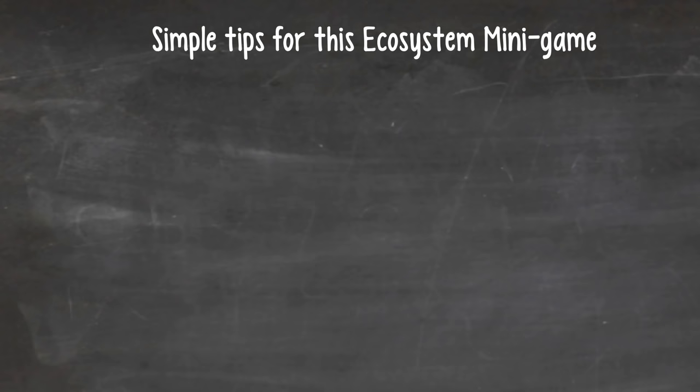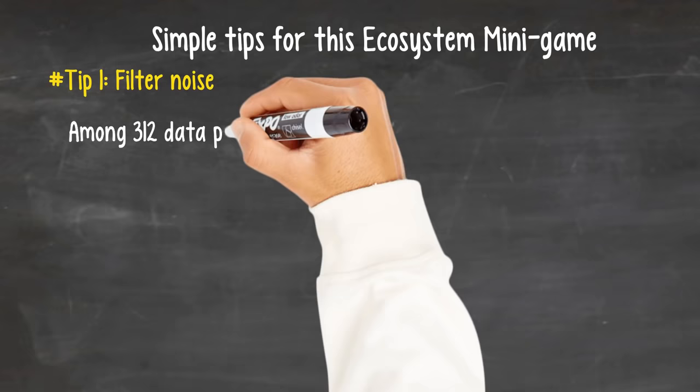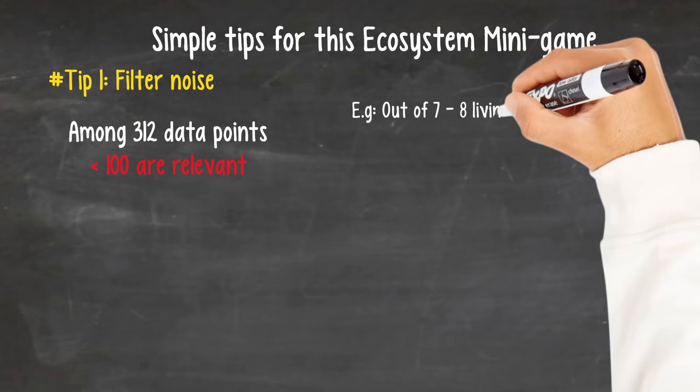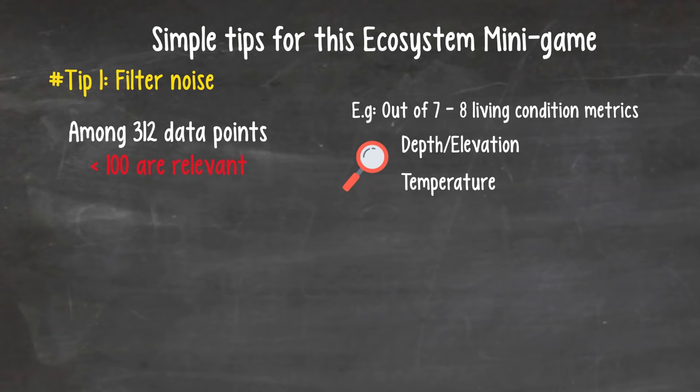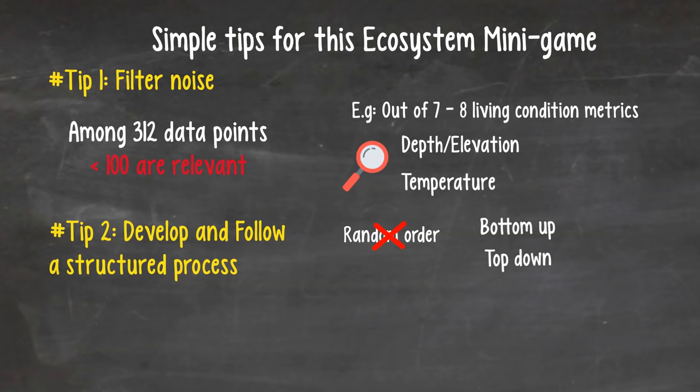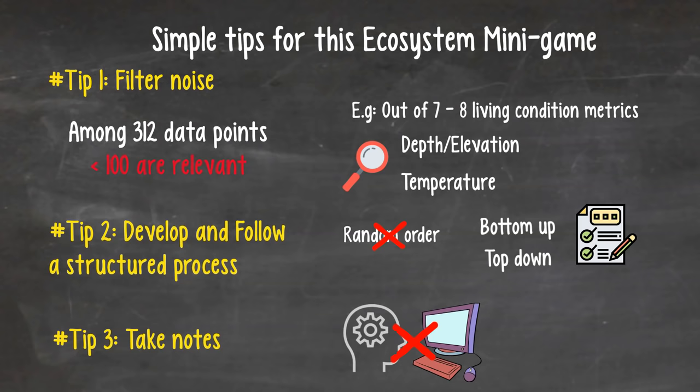Apply these, and with practice, you'll soon be mastering the game. For more advanced tips, look up to our website at the link below. Tip 1. Filter Noise. Among over 312 data points presented in this mini-game, fewer than 100 are actually relevant. Study the game hard, and find out beforehand which data points you can ignore, and which you have to pay attention to. For example, out of 7-8 living condition metrics, you only need to care about the depth and elevation and temperature. Others are just noise there to distract you. Tip 2. Develop and follow a structured process. Do not pick your species in a random order, bottom up from the producers, or top down from the apex predators. Either way is fine, but always have a structure in your mind. Tip 3. Take Notes. Don't just calculate in your head and play on the screen. The main battle is fought on the scratch paper in front of you.